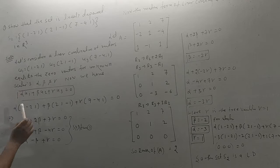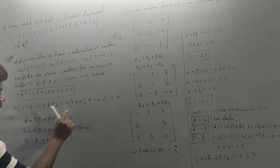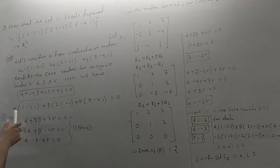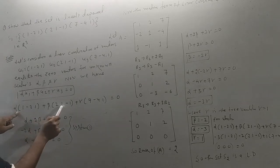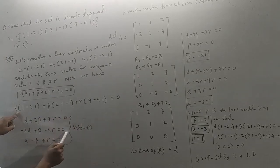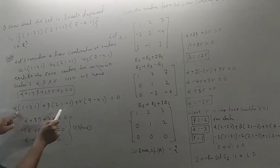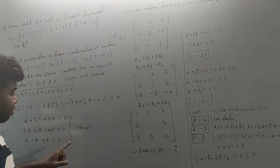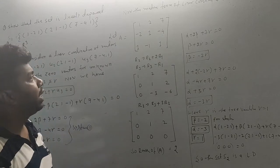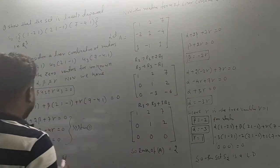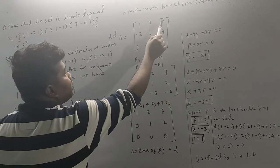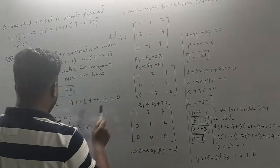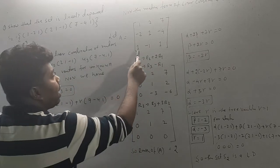Expanding: alpha, 2·beta, 7·gamma for the first row. We write this in matrix form. The matrix is: row 1 is (1, 2, 7), row 2 is (-2, 1, -4), row 3 is (1, -1, 1). We then draw the matrix and perform row reduction.